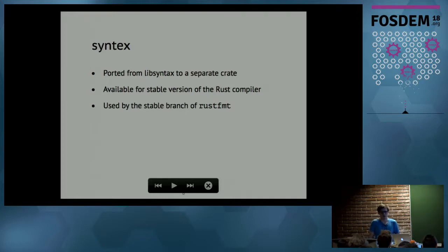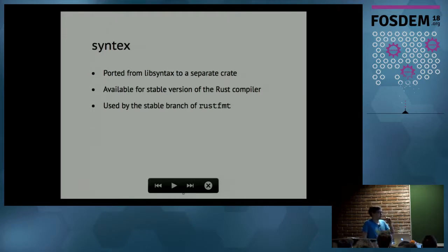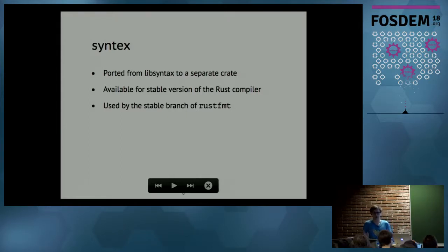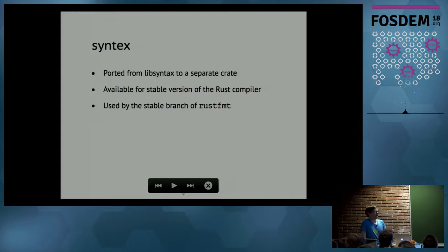The syntax crate has the exact same API, so you can use it interchangeably. If you're not allowed to use a nightly version of the compiler, it's a drop-in replacement. However, this library has been deprecated and its usage is mostly confined to legacy projects — it's still available on crates.io. If you're starting from scratch, you can use an alternative library called 'syn' (S-Y-N), which is used by multiple projects. The syntax crate is used by RustFmt on stable, so it's basically a matter of preference.